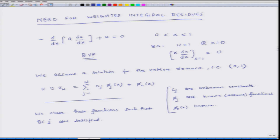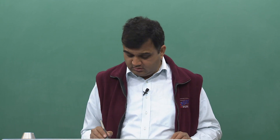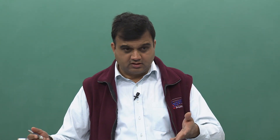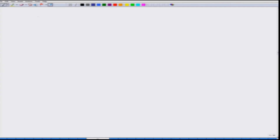Why do we choose the functions such that boundary conditions are satisfied? Because the governing differential equation is not valid on the boundary, and we will be plugging the assumed solution into the ODE to ensure that the governing equation is satisfied. So while we are choosing the function, we just have to make sure that these functions satisfy the boundary conditions, because we are going to ensure the governing equation is satisfied anyway later.